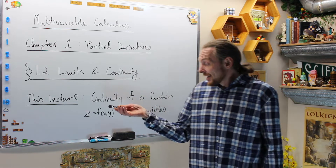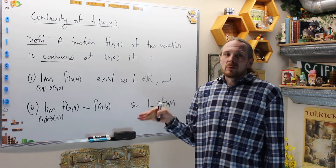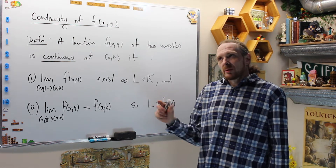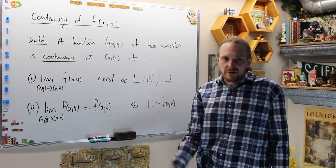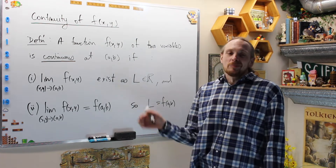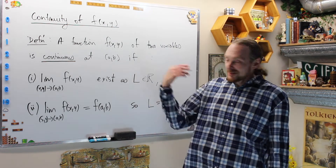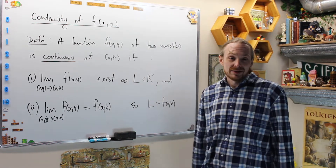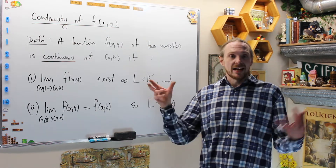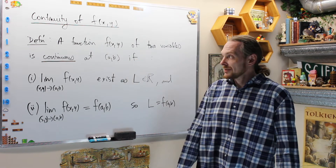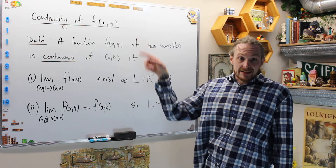What we're going to do today is continuity of a function of two variables. The next video will be a supplementary video where we do this for f(x, y, z), or three or more variables. We start with two variables because we can actually draw the graph in higher dimensions. We can't draw the graph of a function of three variables or more, so the next video will cover limits and continuity for f(x, y, z) or higher.